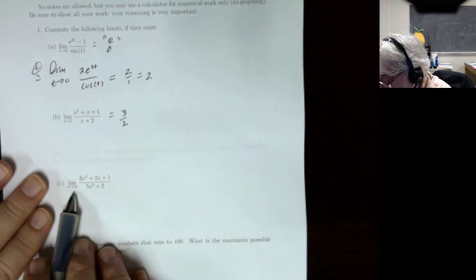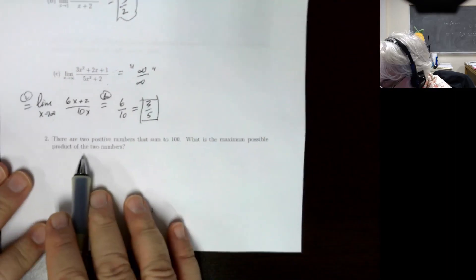The bottom problem: as x goes to infinity, the numerator goes to positive infinity and the denominator goes to positive infinity, so we have the infinity over infinity case. Applying L'Hôpital's rule gives 6x plus 2 on top and 10x on the bottom. As x goes to infinity both still go to infinity, so we apply L'Hôpital again to get 6 over 10, which simplifies to 3 over 5.